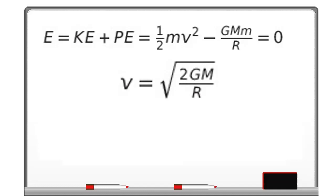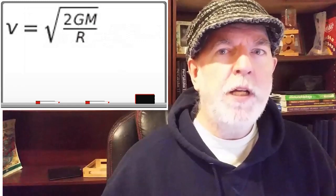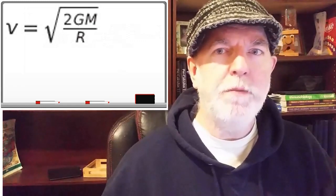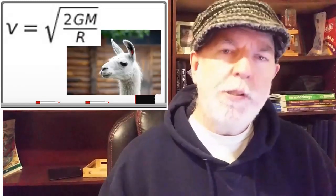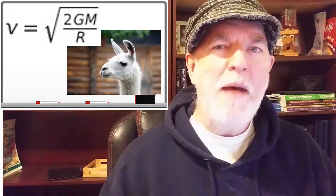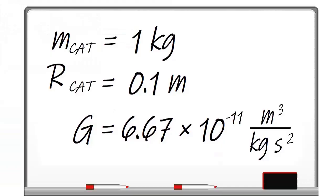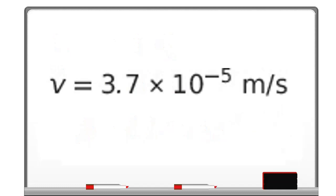Notice that the mass of the flea has been excised from this expression. We don't really care about the masses of fleas. The escape velocity from the cat is the same for fleas, porcupines, watermelons, and llamas. Using our assumed figures for the mass and radius of the cat, as well as the standard value for Newton's gravitational constant G, we obtain the desired result.